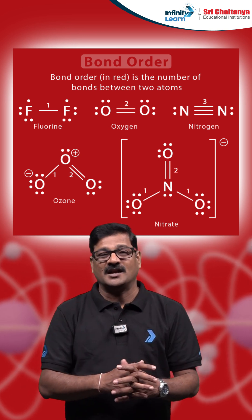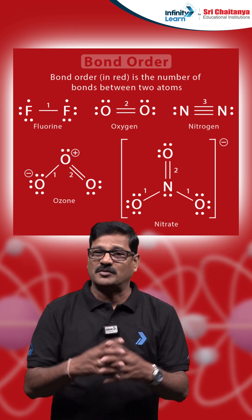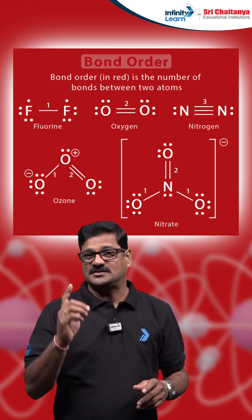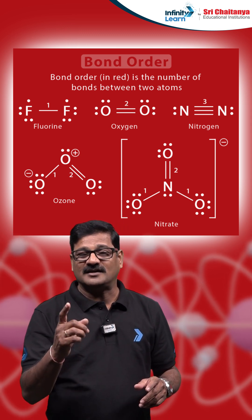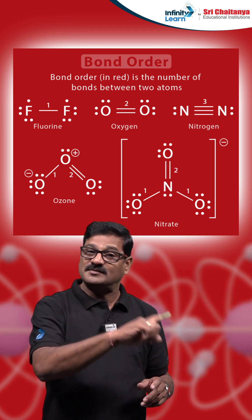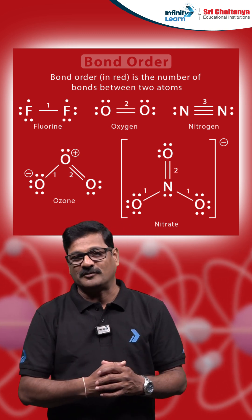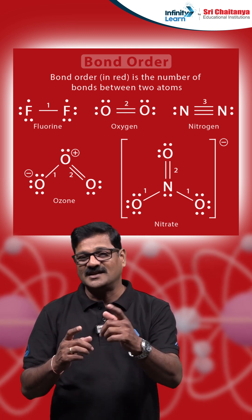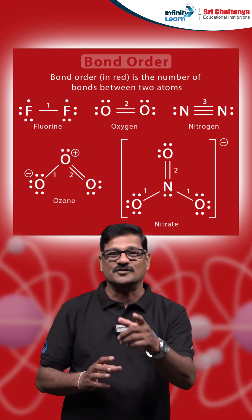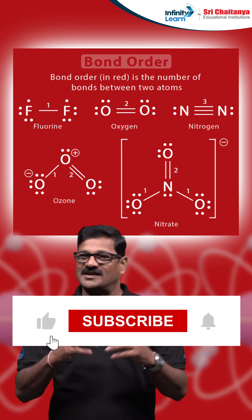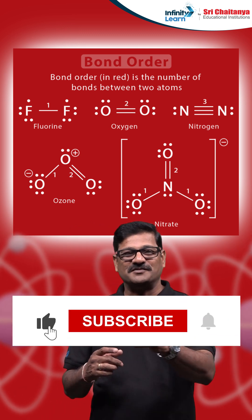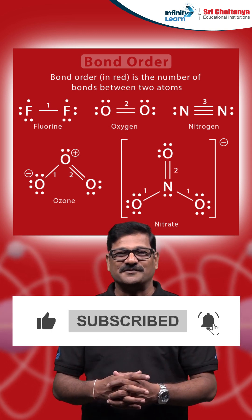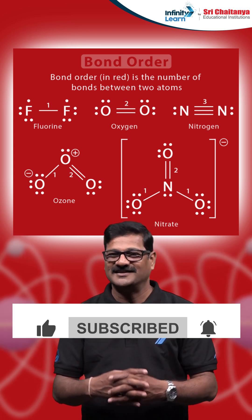When a molecule tries to become an ion, one or more electrons have to be removed. Try to remove the electrons from the anti-bonding molecular orbital. Please like this session, share with your friends, and subscribe to the Leading Media channel. Thank you.